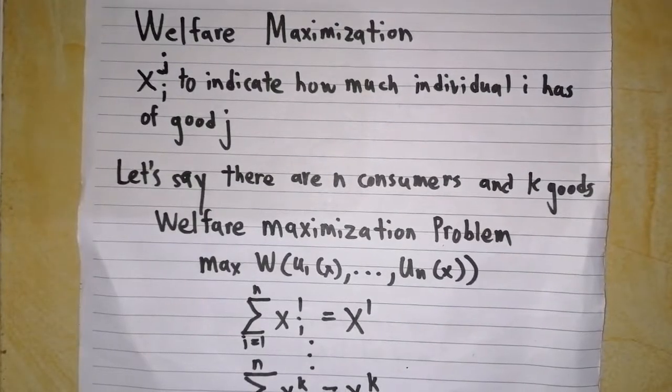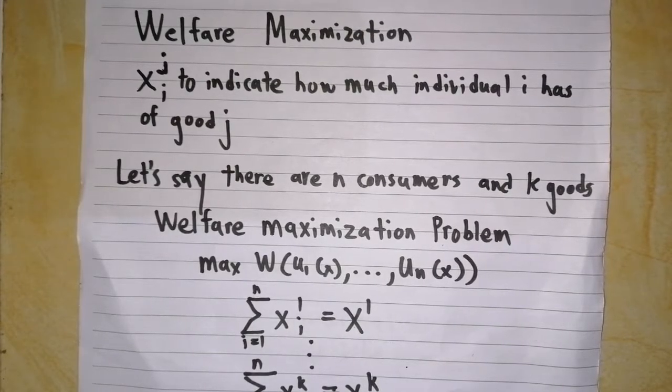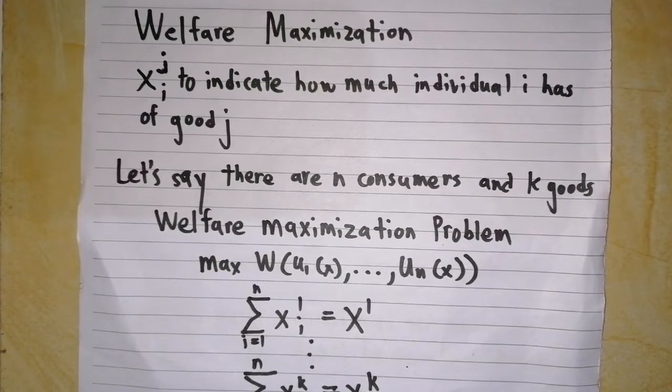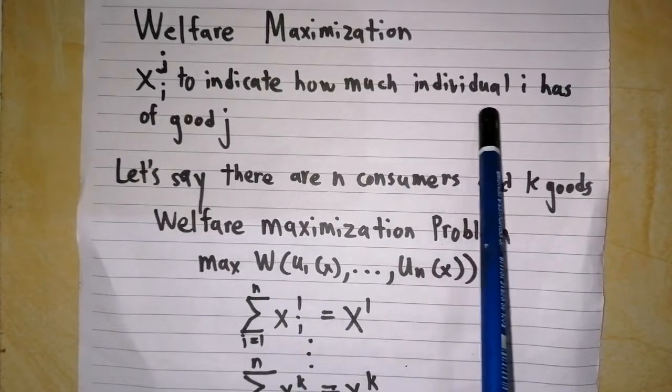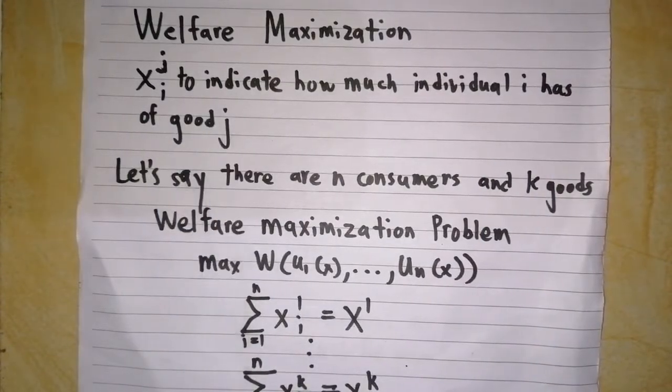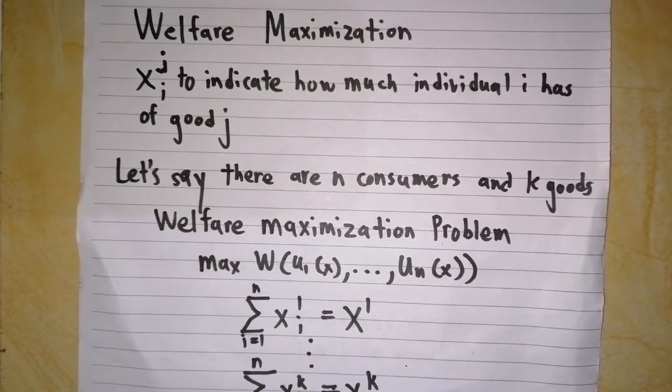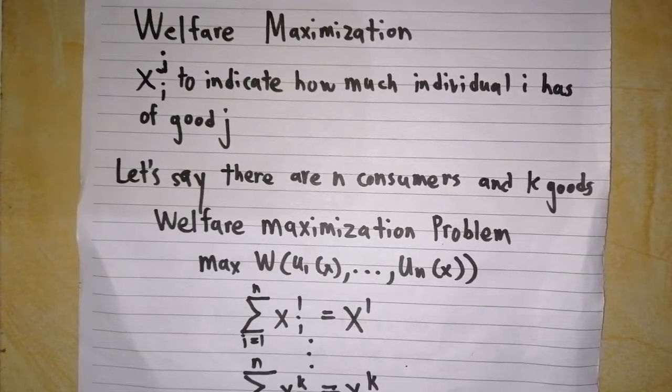In this second section of the video, I will explain welfare maximization. We have learned social welfare function and now we can examine welfare maximization problem. First we use the notation X_i^j to indicate how much individual i has of good j. Let's say there are n consumers and k goods in the society. Then the allocation X consists of the list of how each of the agents in the society has of each of the goods.